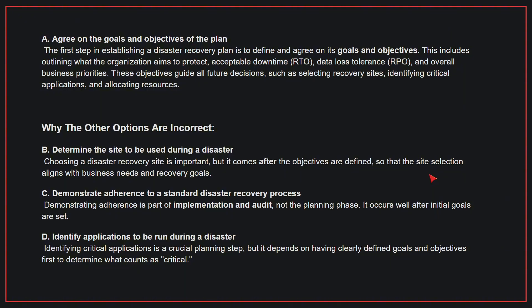This includes outlining what the organization aims to protect, acceptable downtime, data loss tolerance, and overall business priorities. These objectives guide all future decisions, such as selecting recovery sites, identifying critical applications, and allocating resources. Why the other options are incorrect? B: Choosing a disaster recovery site is important, but it comes after the objectives are defined so that the site selection aligns with business needs and recovery goals. C: Demonstrating adherence to a standard disaster recovery process is part of implementation and audit, not the planning phase — it occurs well after initial goals are set. D: Identifying critical applications is a crucial planning step, but it depends on having clearly defined goals and objectives first to determine what counts as critical. Therefore, the correct answer is A.